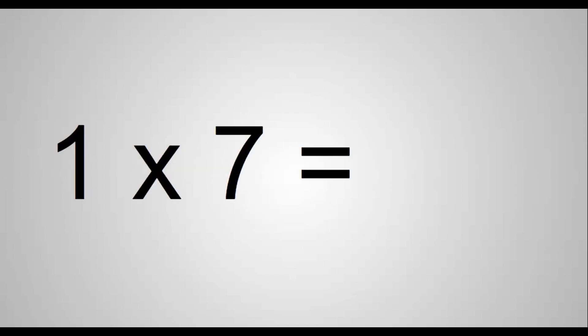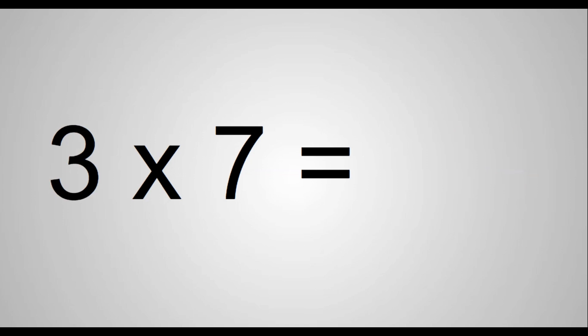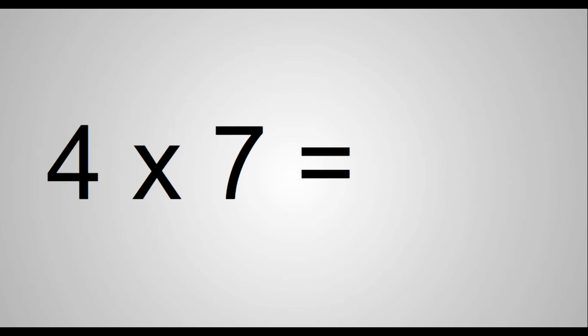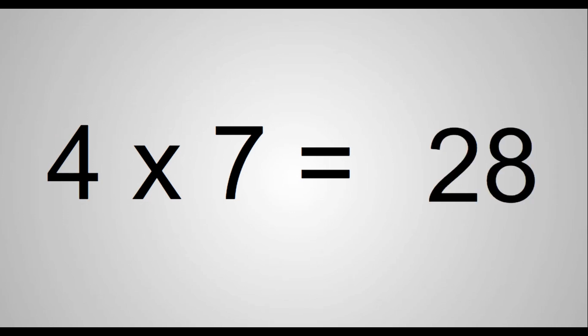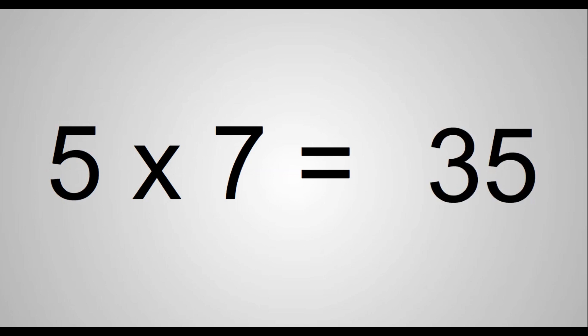1 times 7 equals 7. 2 times 7 equals 14. 3 times 7 equals 21. 4 times 7 equals 28. 5 times 7 equals 35.